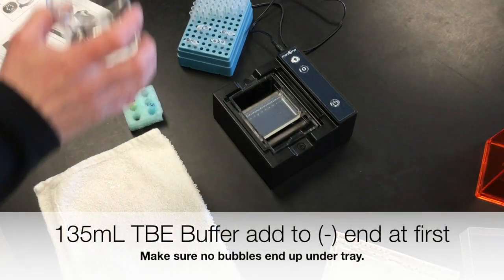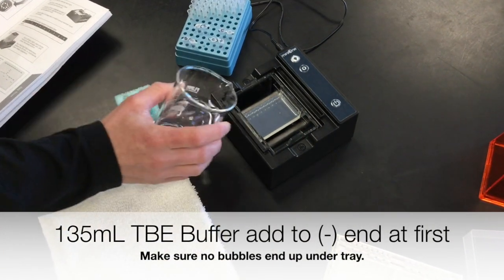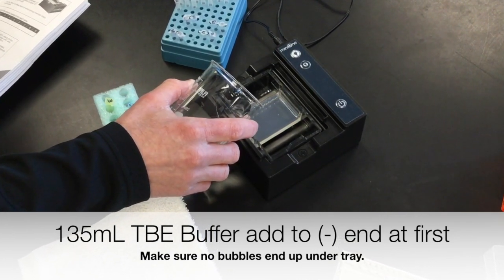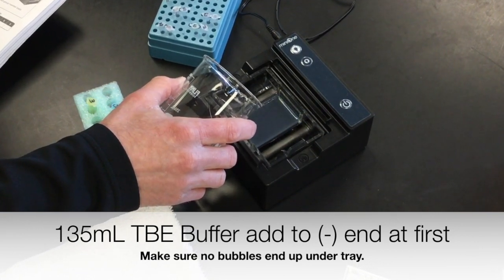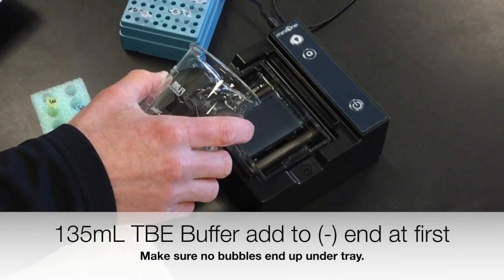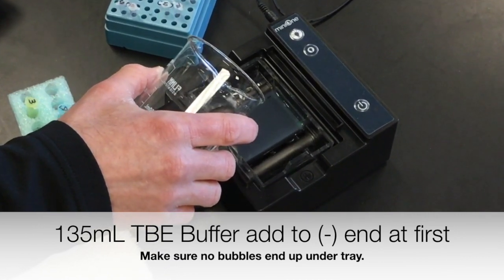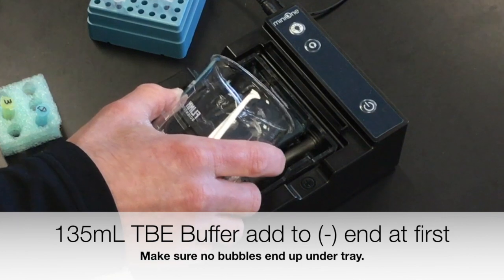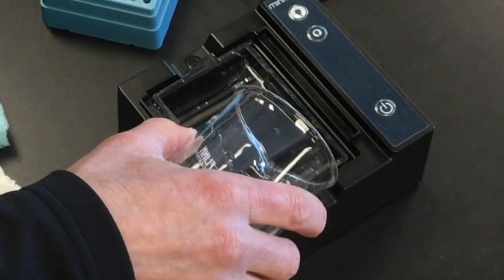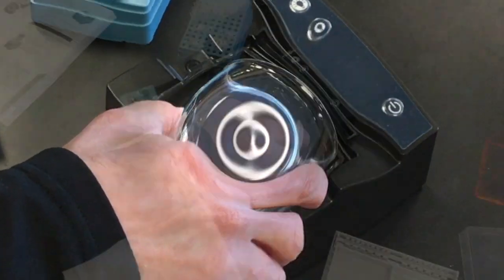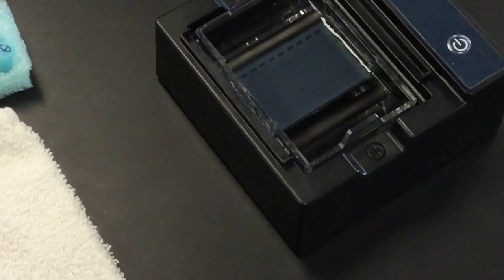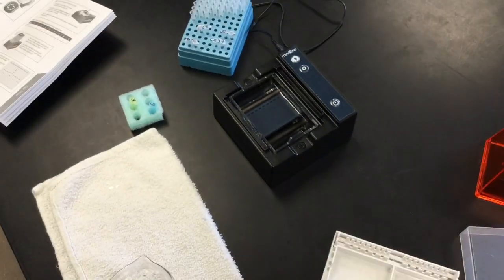All right. Now I'm going to carefully pour my TBE buffer from one side all the way to the other. Letting the bubbles get pushed out, letting it roll over the top. I can move to the other side once it's splashing over, basically. And when I'm done pouring, my gel should be completely submerged. Cool.